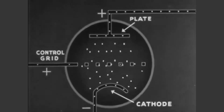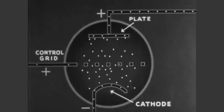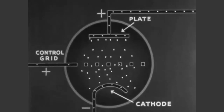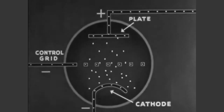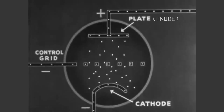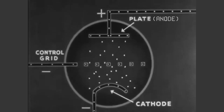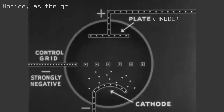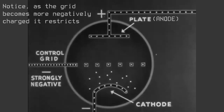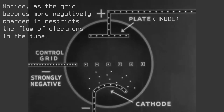When the tube is operated, the cathode is heated just like a light bulb. Since it is in a vacuum, it won't burn, just emit electrons. The anode then receives the emitted electrons. During their movement from the cathode to the anode, the electrons pass through a grid, which can be used to regulate their flow.